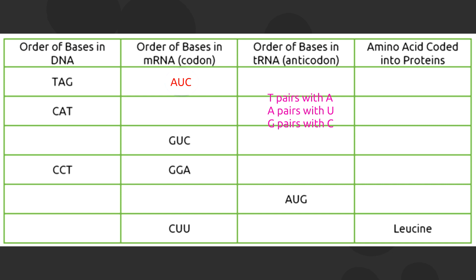How about for the order of bases in tRNA? We follow the rule in translation, which is just the same as transcription. So the anticodon is U-A-C.